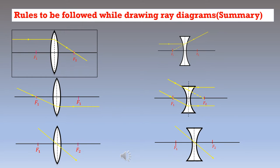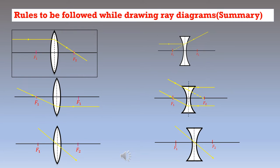Here is a summary of the rules. Rule 1 is about the ray which is parallel to the principal axis — after refraction it will pass through the focus. Rule 2 is about the incoming ray which is passing through the focus — it goes parallel to the principal axis after refraction. Rule 3 is about the ray which is passing through the optic centre — it will go undeviated.